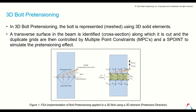In 3D bolt pretension, the bolt is represented as 3D solid elements. A transverse surface in the bolt is identified and cut, and duplicate grids are then controlled by multiple point constraints (MPC) and an S-point to simulate the pretensioning effect. In this image we can see the S-point, which is an independent scalar point, connected by MPC to duplicate grids — that is, the independent grid and dependent grid of the bolt.